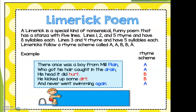Let's look at what a limerick poem entails. A limerick is a special kind of nonsensical funny poem that has a stanza with five lines. Lines one, two, and five rhyme and have eight syllables each. Lines three and four rhyme and have five syllables each. Limericks follow a rhyme scheme called A-A-B-B-A.